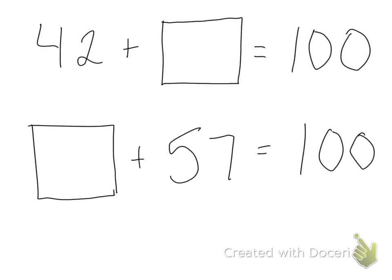What about 42? Well, 42 plus something has to equal 100. I can think, first of all, I need to have my ones place be zero. So, 2 plus what equals 10? I know that 2 plus 8 equals 10.